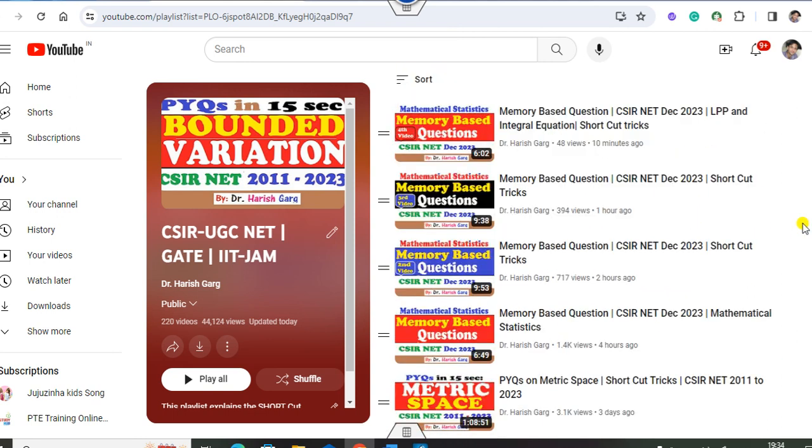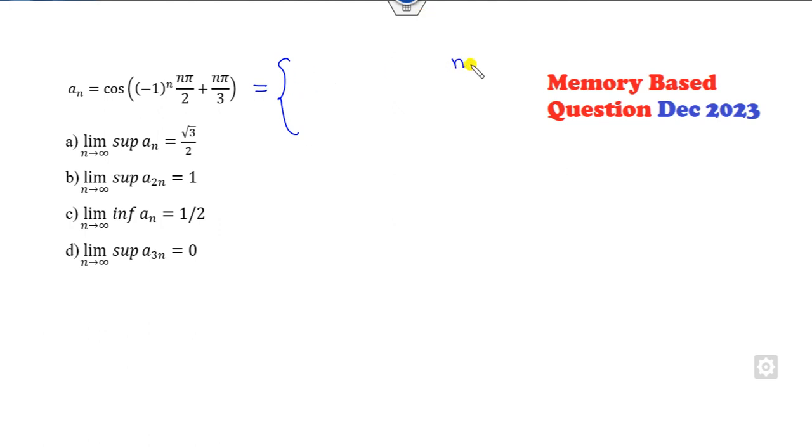I can solve with the same approach. This is my infimum and supremum lecture. How can you solve that? I can take n is even or n is odd. When n is even, the value will be n·π/2 + n·π/3, and whenever n is odd it will be -n·π/2 + n·π/3.